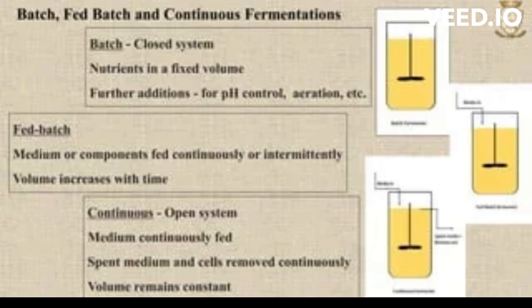An example of a fed-batch culture is growing bacteria in a test tube with a fixed amount of nutrient medium and then periodically adding more medium to the culture. This method allows for higher cell densities and productivity than a simple batch culture, but the culture must still be harvested at the end of the process.